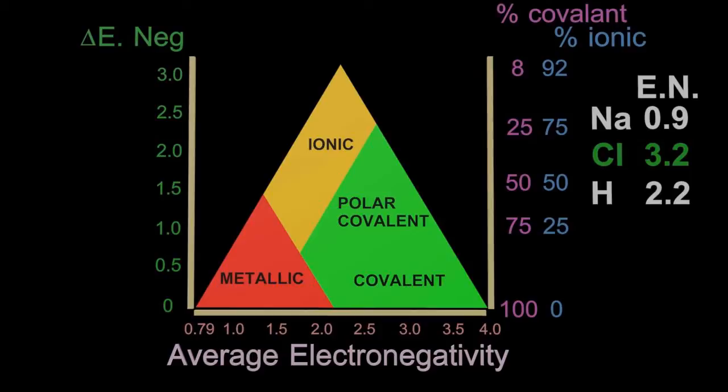In more detail, there it is, straight out of the IB data booklet. So let's look at sodium, pure sodium first of all. So all elements are going to be right along the bottom of that triangle, because the difference in electronegativity, if it's just one type of atom, is going to be zero. And so yes, sodium, that's metallic. It's right in that corner with the metallic one.